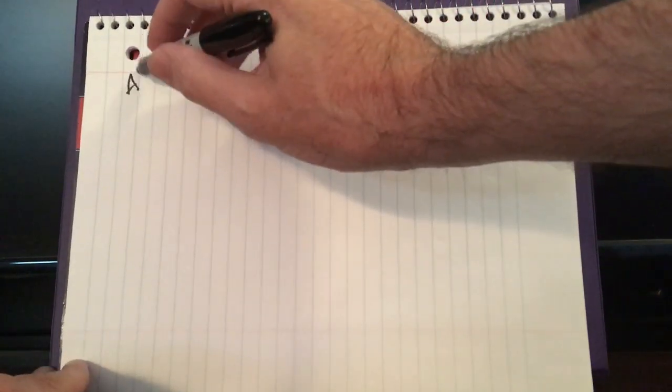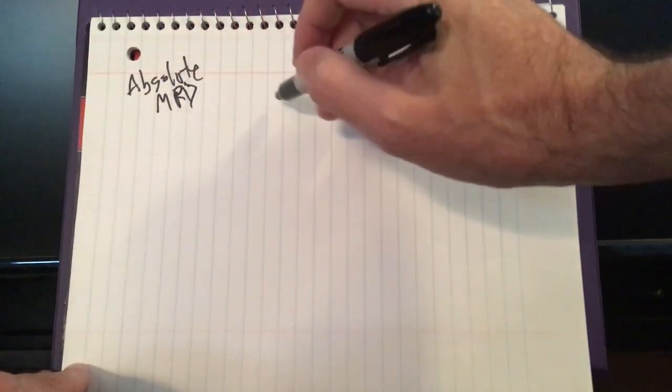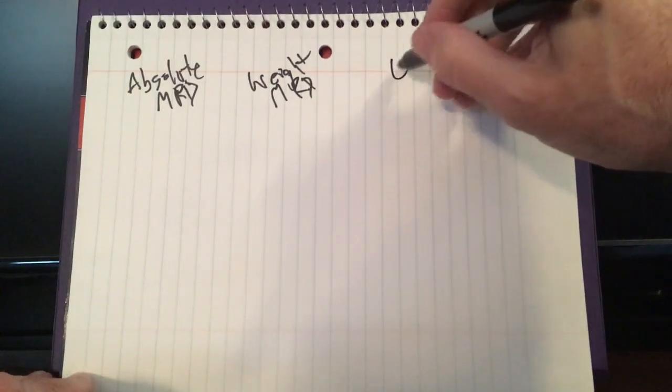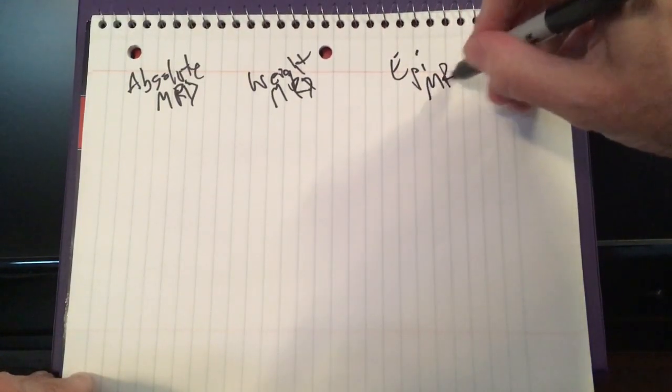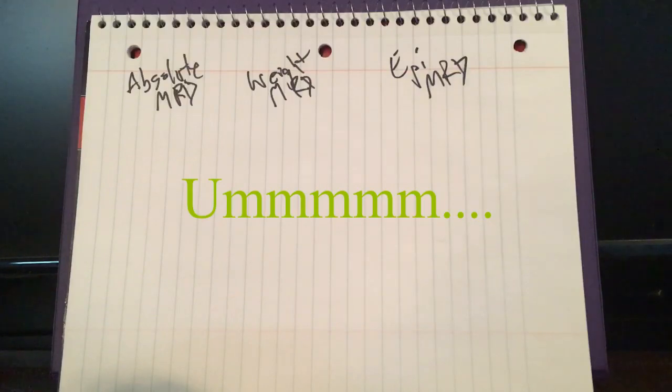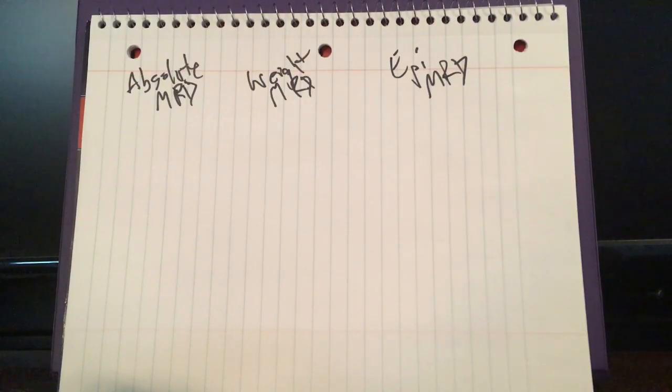So to start out we're really talking about three different things. We're talking about absolute MRD, we're talking about MRD by weight - this is the weight of a patient - and these are both local anesthetic. But then we're also talking about epinephrine MRD. Please excuse my handwriting. Now absolute MRD you just look it up, it's usually listed by milligrams. By weight they're going to list in America, you know, we use pounds per milligram. And then epinephrine we'll do some calculations there.